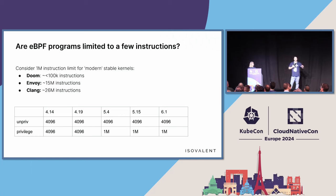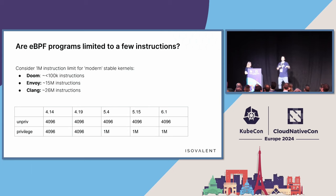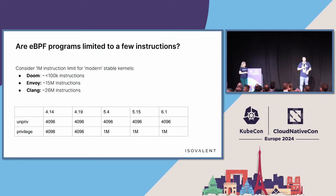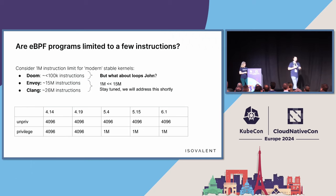To give a sense of scale for what a million instructions means: taking a napkin approach looking at a few programs — a basic Doom clone is less than 100K instructions. Envoy, which we use in Cilium and Tetragon for proxying, is about 15 million instructions. Clang is around 26 million instructions. You might come back and say Doom might have loops — stay tuned, we'll talk about how to handle those larger cases.